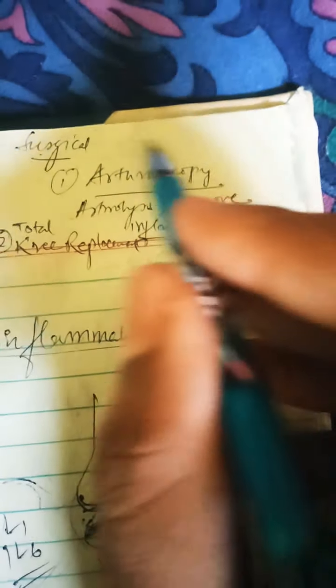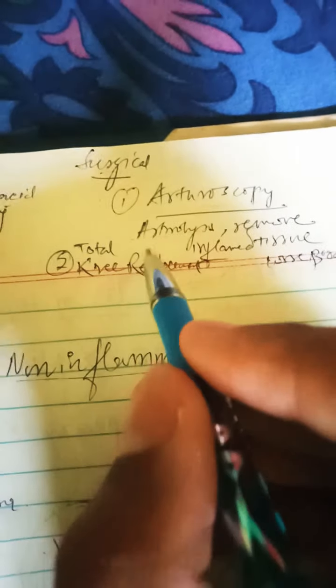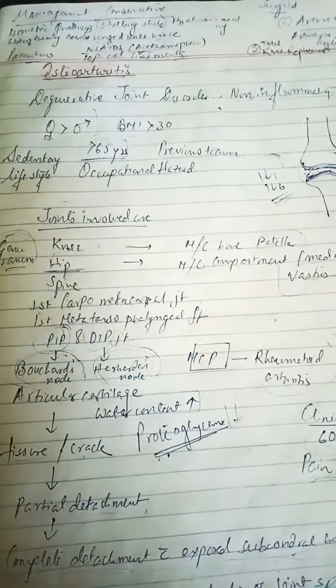If conservative management does not help the patient, we proceed to surgical management: arthroscopy, where we do arthrolysis to remove inflammatory tissue and loose bodies, or we can also do total knee replacement or total hip replacement. This is all about osteoarthritis.